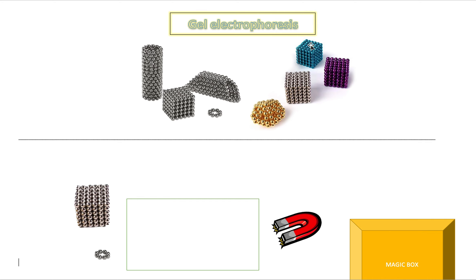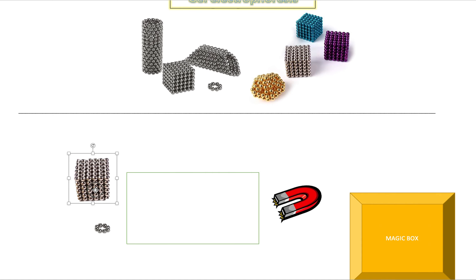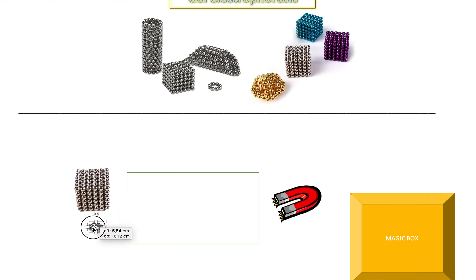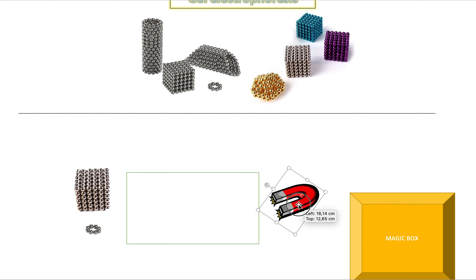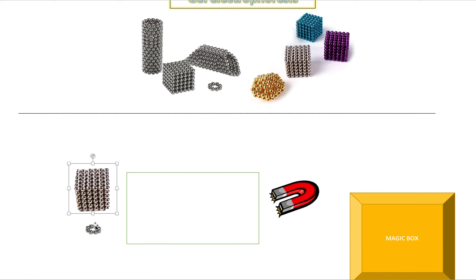Have you ever seen those tiny magnets where you can make shapes? Pretend you take a big one and a small one and put them on one side of a flat surface. On the other side of the table you have a super strong magnet that's going to pull them both towards itself. Which one — the big one or the small one — do you think is going to travel the fastest towards that magnet?